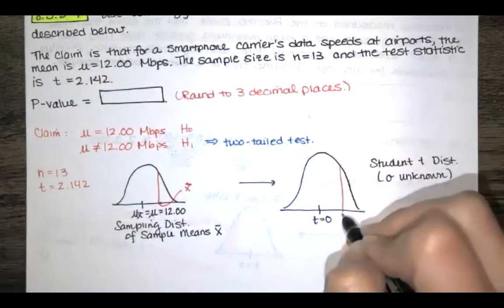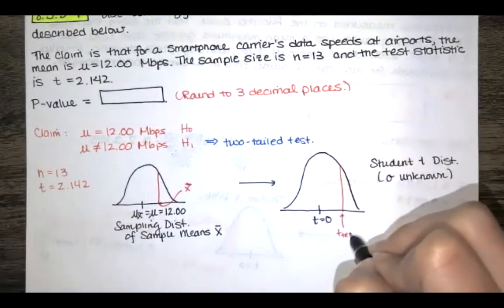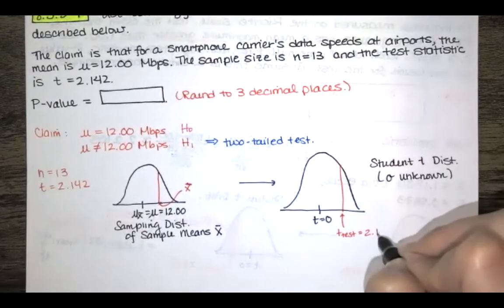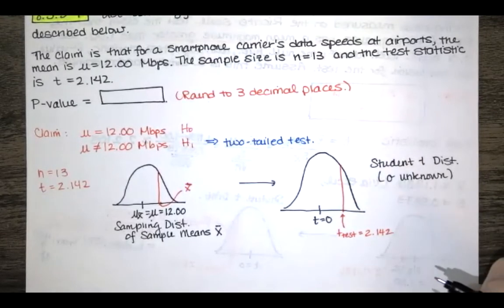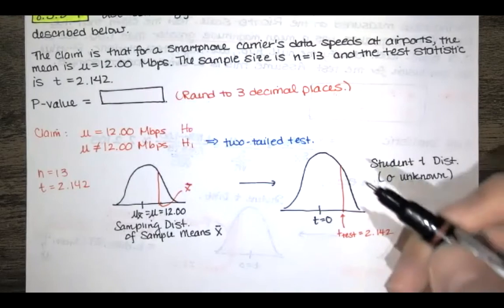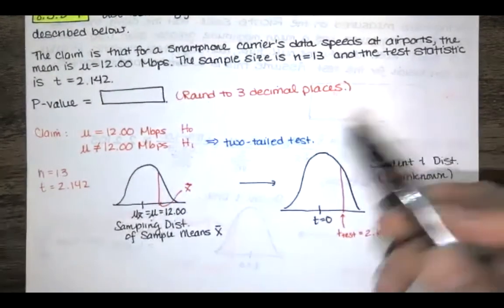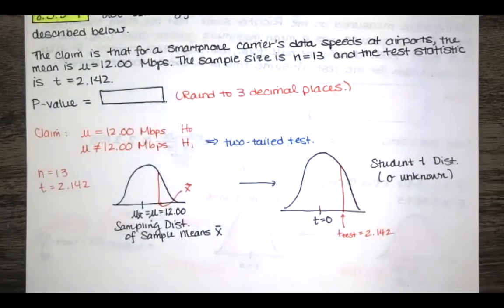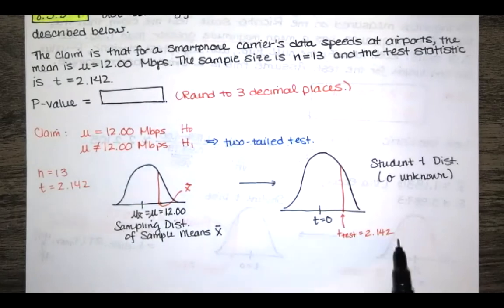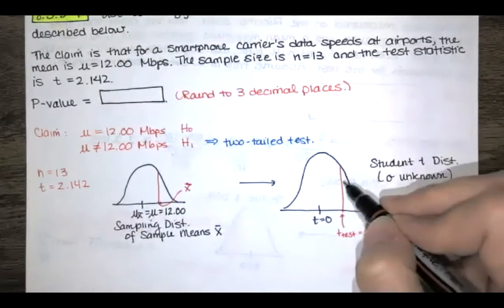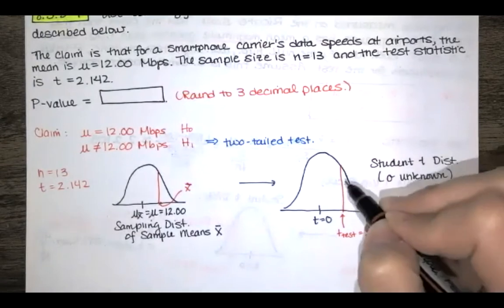So our test statistic t is right here and that's equal to 2.142. And so if we want the p-value and that's what we want since it's a two-tailed test I want the p-value is probability that we have a test statistic equal to the value from our sample or a test statistic that is more extreme than that.